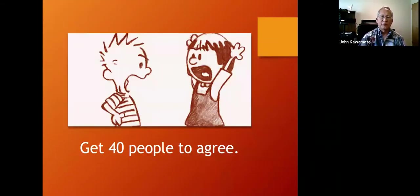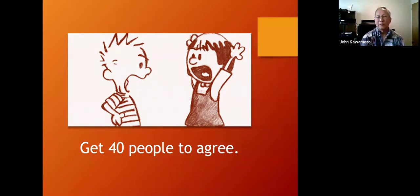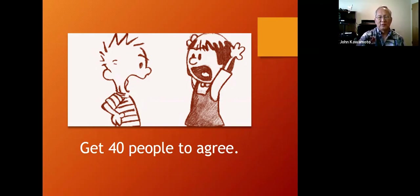If you're trying to get a bill passed, the object is to get 40 people to agree — 40 people in the legislature. That's a majority of the 51 members of the House, which is 26, plus a majority of the 25 members of the Senate, which is 13, plus the governor has to be on board. So it's 26 plus 13 plus 1 equals 40 people.